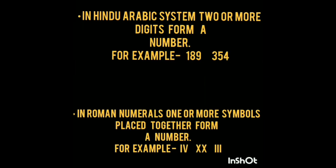In Hindu-Arabic system, two or more digits form a number. For example, 189 or 354. In Roman numerals, one or more symbols placed together form a number, like IV forms 4, XX forms 20, and III forms 3.